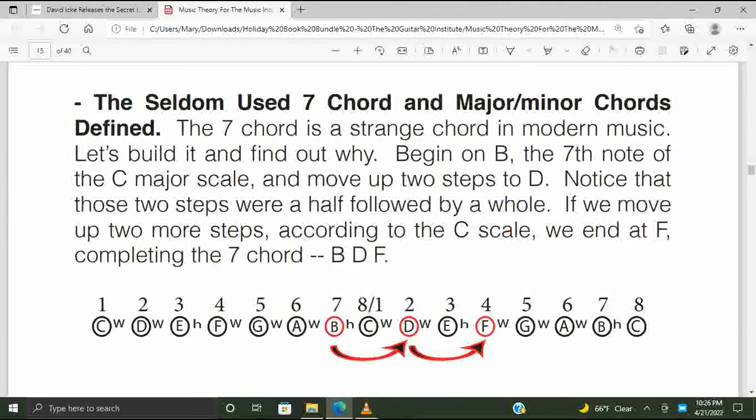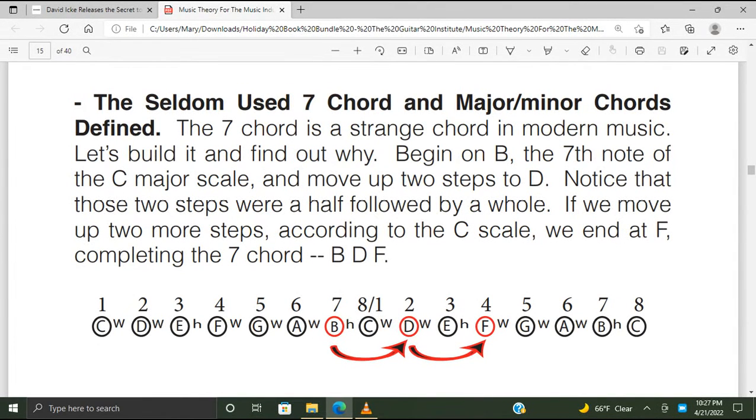The seldom used seventh chord and major minor chords defined. The seventh chord is a strange chord in modern music. Let's build it and find out why. Begin on B, the seventh note of the C major scale, and move up two steps to D. Notice that those two steps were a half followed by a whole. If we move up two more steps according to the C scale we end at F, completing the seventh chord.